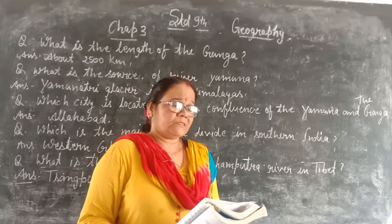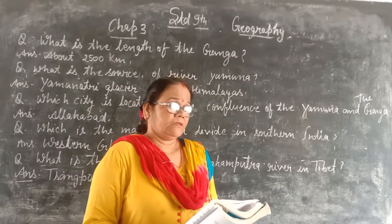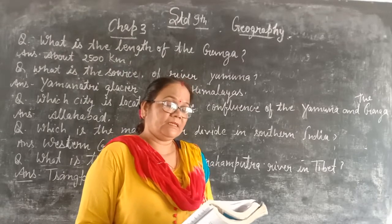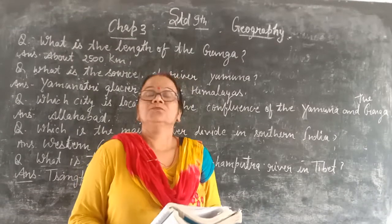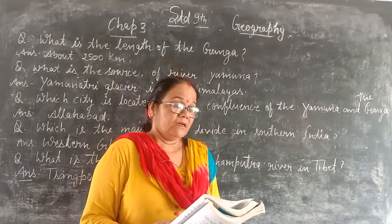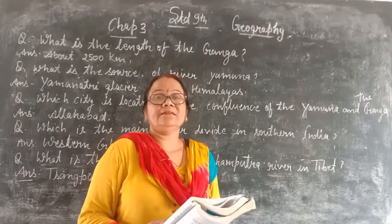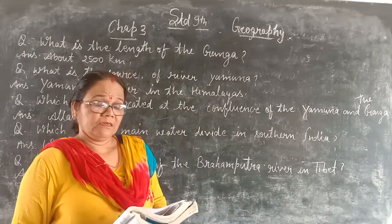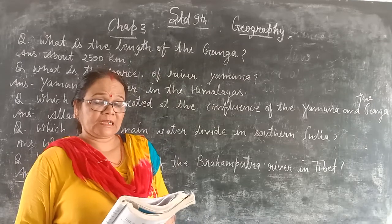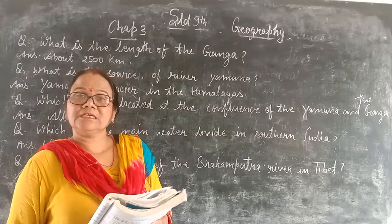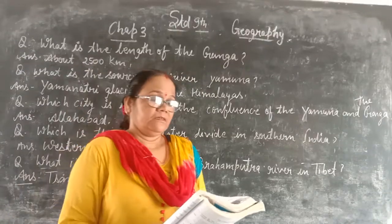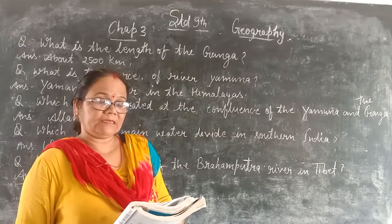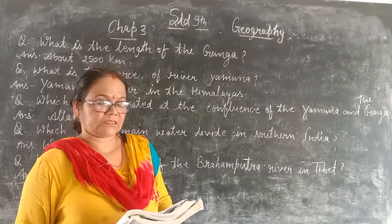Name two large rivers of India which flow into the Arabian Sea. India's two big rivers which flow into the Arabian Sea are the Narmada and the Tapi. The Narmada arises near Amarkantak in Madhya Pradesh.